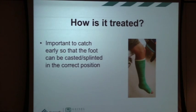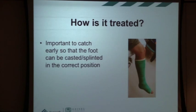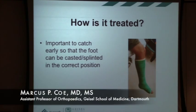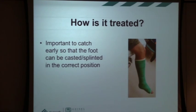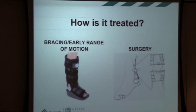These are important to catch early because the sooner you can be casted or splinted in the appropriate position — essentially bringing those two tendon ends together so they're touching — the quicker you'll get on the road to recovery no matter which treatment direction you take. The patient should be casted in what we call the equinus position with the toe pointing down, and that's where you want to be as early as possible after an Achilles tendon rupture.